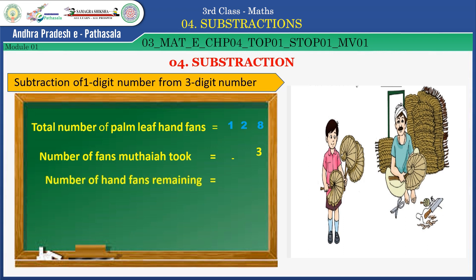Then, 8 ones here and 3 ones here. Number of hand fans remaining — we have to subtract 3 from 8, then we will get 5 in ones place. Tens place: 2, hundreds place: 1. So the answer is one hundred and twenty-five. How will we get the answer 125?